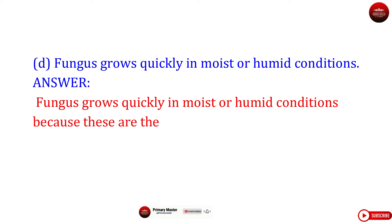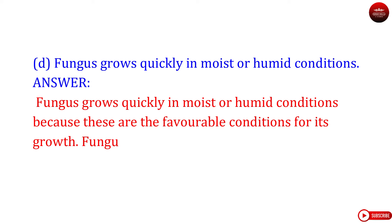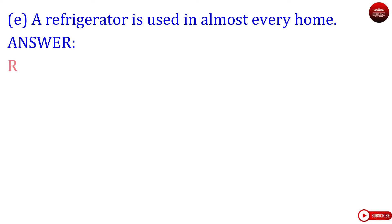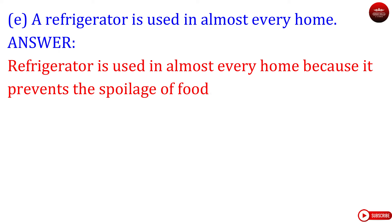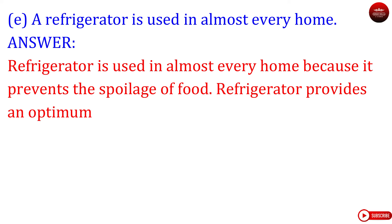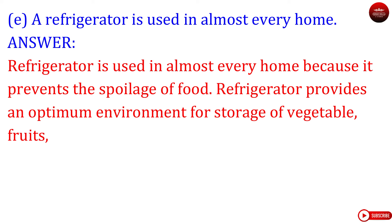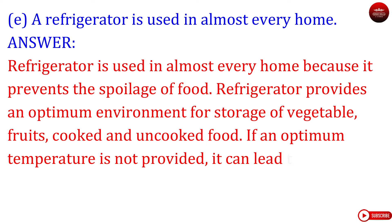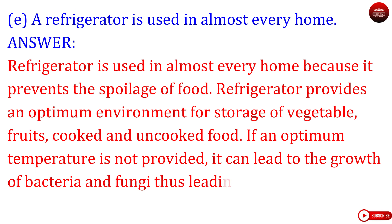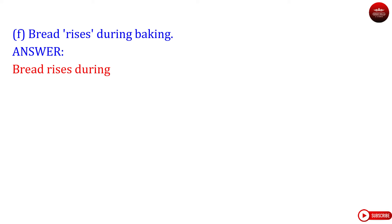Question D: Fungus grows quickly in moist or humid conditions. Answer. Fungus grows quickly in moist or humid conditions because these are the favorable conditions for its growth. Fungus is not seen growing in areas which are well exposed to sunlight. Question E: A refrigerator is used in almost every home. Answer. It prevents the spoilage of food. A refrigerator provides an optimum environment for storage of vegetables, fruits, cooked and uncooked food. If an optimum temperature is not maintained, it can lead to the growth of bacteria and fungi, thus leading to spoilage of food.